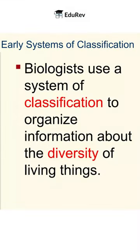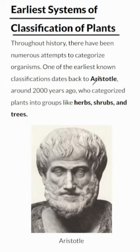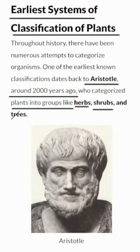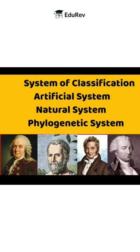Let's take a peek at some of the earliest systems of classification of plants. We start with the ancient wisdom of Aristotle, a philosopher who lived around 2,000 years ago. He was one of the first to categorize plants into groups like herbs, shrubs, and trees — back then, with no microscopes or advanced tools. All classification systems throughout history, from Aristotle to the 20th century, can be neatly divided into three types.